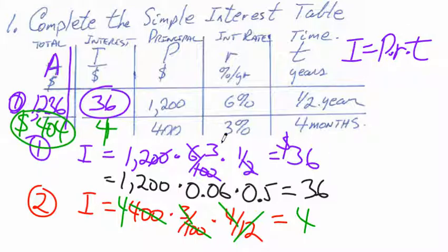When you add the interest that you earned — four dollars — you had four hundred dollars to start. You earned three dollars for every hundred per year, for a third of a year. So you really earned four dollars in interest, plus the four hundred you started with, and you get back four hundred and four dollars.